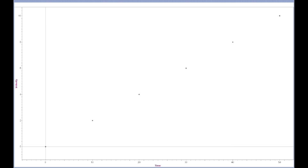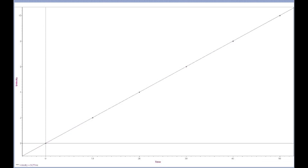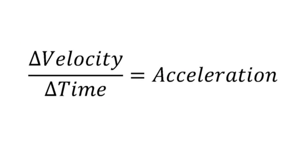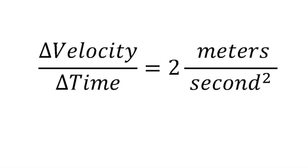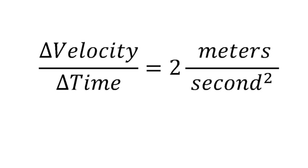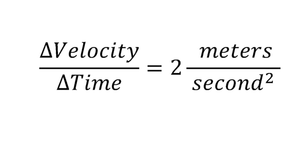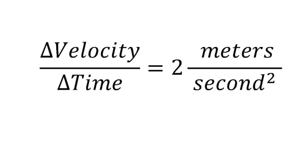We can now plot the change of velocity versus time. This will give us a slope. The slope is equal to 2 meters per second per second, or 2 meters per second squared. This is a measurement of the increase in the person's velocity. We can say that they are accelerating at a rate of 2 meters per second squared.